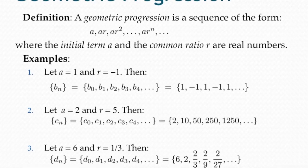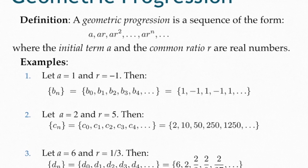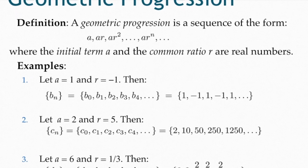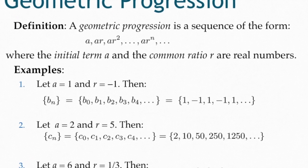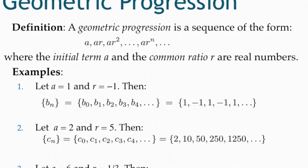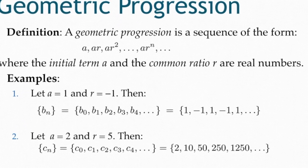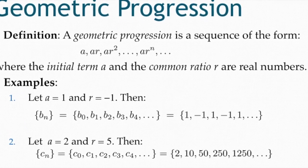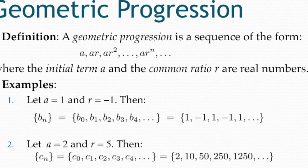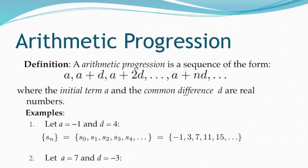For sequence d(n) with a=6 and r=1/3: the first term is 6, the second term is a·r = 6·(1/3) = 2.